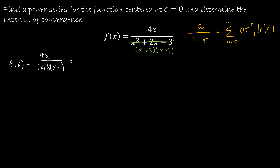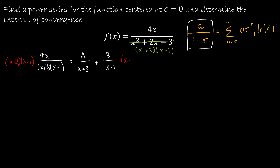That's not helpful because I'm still not where I want to be. But I could be if I use partial fractions. I'm going to call A the coefficient over (x + 3) and B the coefficient over (x − 1). Taking everything times the denominator, on the left-hand side I end up with the numerator, which is 4x. On the right side, the (x + 3) cancels, leaving A·(x − 1), and the (x − 1) cancels, leaving B·(x + 3).